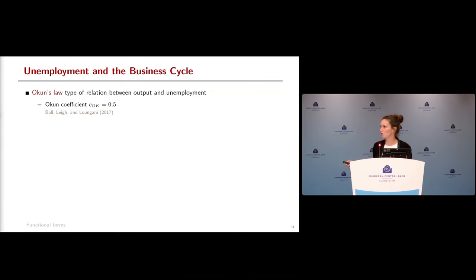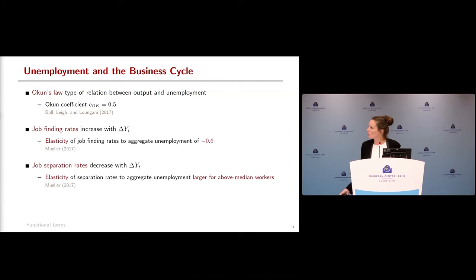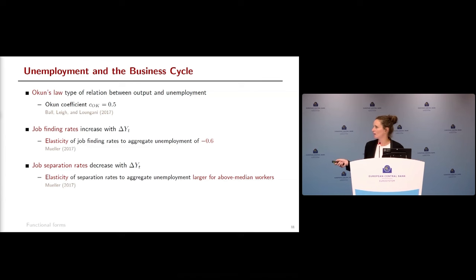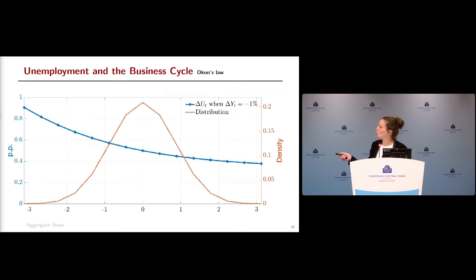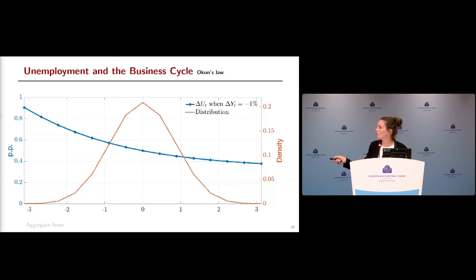We generate cyclical unemployment by assuming job finding rates fall and separation rates rise in recessions, with the distribution of these rates disciplined by Müller's elasticity estimates. In a one-percent output recession, average unemployment rises by about 50 basis points, but unemployment increases substantially more for low-income households than for high-income households — consistent with empirical patterns of counter-cyclical unemployment that is concentrated at the bottom of the income distribution.